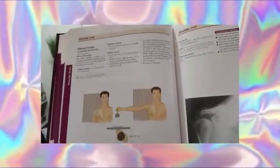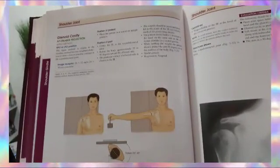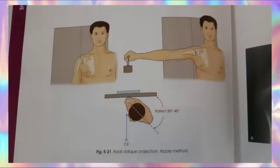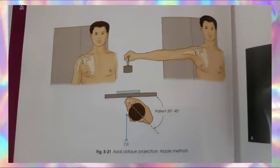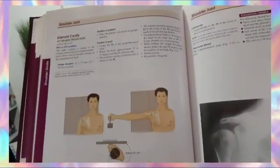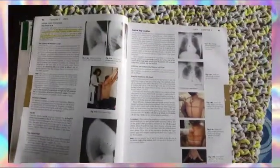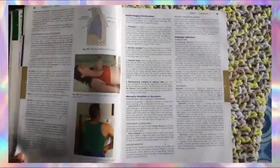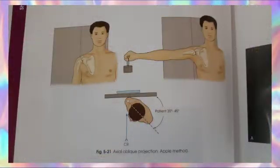At least for this seventh edition of Bontrager, I noticed it does not have a particular position that Merrill's has. For the shoulder, we know we have a lot of views — AP, AP obliques, transthoracic, and all of that. However, in Merrill's there's a particular view that focuses on the glenoid cavity called the Apples view, and I realized that the Bontrager book does not have the Apples view — it has the AP oblique projection instead. That projection is not weighted unlike the Apples. They have the Grashey, but they don't have the Apples. Once in a while, you'll see that Merrill's might have an additional view or projection that Bontrager may not have — so that's just something to make note of.